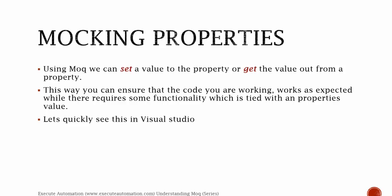Mocking properties using mock — we can also set a value to the property or get the value out from a property. This way you can ensure that the code you are working on works as expected when it requires some functionalities tied with a property's value. Let's quickly see this in Visual Studio and start working on how to set a value to a property for a mock object and how to get a value out from a mock object using the mock framework.